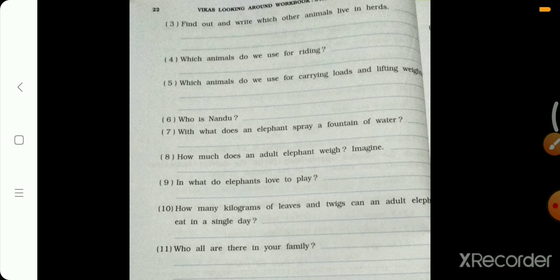With what does an elephant spray fountain of water? Chalo, kis ki help se woh water ko fountain ki tarah use karte hai? With the help of trunk. How much does an adult elephant weigh? Chalo, adult elephant hota hai, uska weight kitna hota hai? Imagine kar sakte ho, aap imagine. Kitna hoga, pata hai? Chalo, baby elephant Nandu hai na, uska weight 200 hai. Toh, jo adult hai, unka weight kitna hoga? Think about it. Approximately 4-5,000 jitna hoga, right? 4-5,000 kilogram. 200 kilograms do baby elephant ka weight hai.